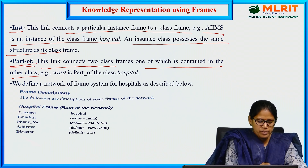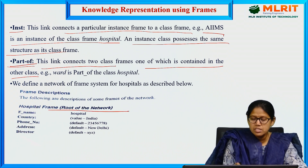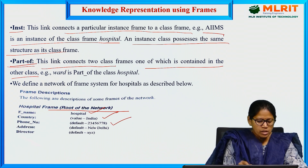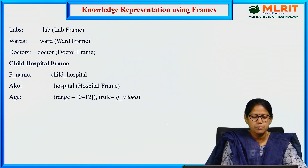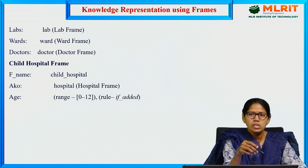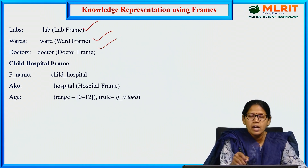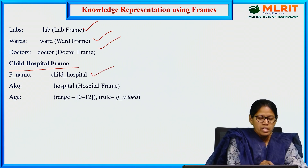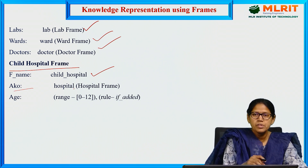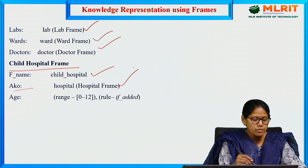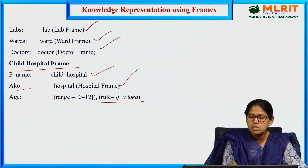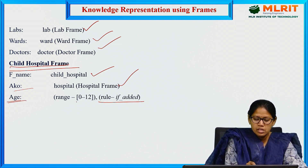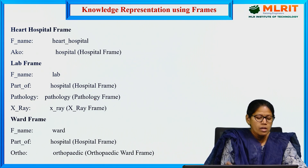Hospital is the root of the network. Frame name is hospital, country is India, phone number, address, director name XYZ. Other frames within it are labs, wards, and doctors. Next, child hospital frame — frame name is child hospital, echo relates it to the hospital frame. Age has a daemon — a rule if added — that the child hospital patient must be between age 0 to 12 only.